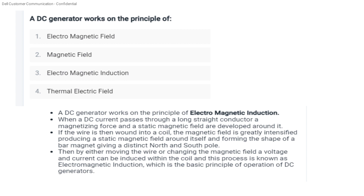First question: the principle of a DC generator is called Electromagnetic Induction. What is Electromagnetic Induction? Whenever a DC current passes through a long straight conductor, a magnetizing force and a static magnetic field are developed around it. If the wire is then wound into a coil, the magnetic field is greatly intensified, producing a static magnetic field.